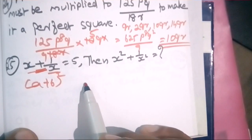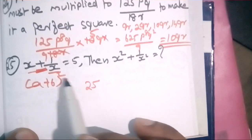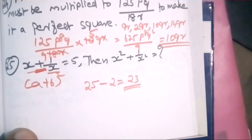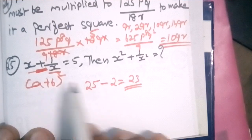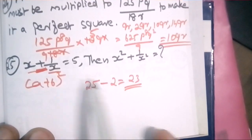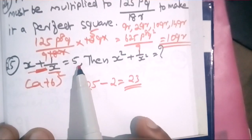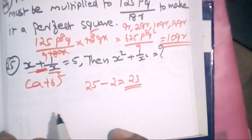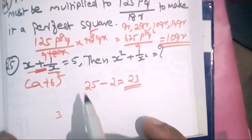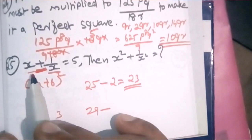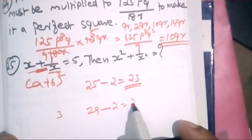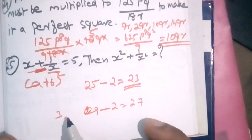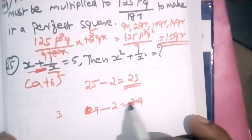We apply the identity: a plus b whole squared equals a squared plus 2ab plus b squared. So x plus 1 by x whole squared equals x squared plus 2 plus 1 by x squared. That gives us 5 squared equals x squared plus 1 by x squared plus 2. So x squared plus 1 by x squared equals 25 minus 2, which equals 23.